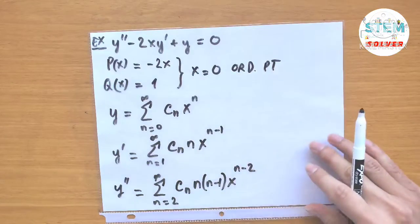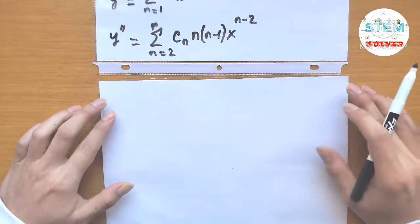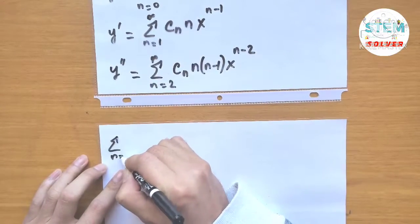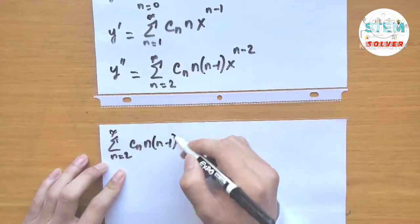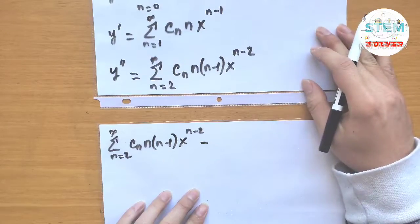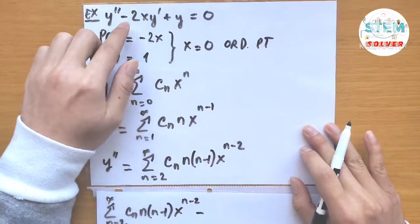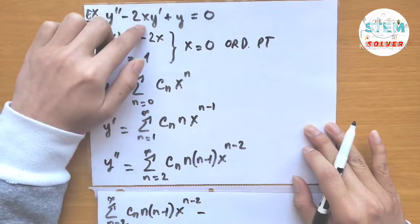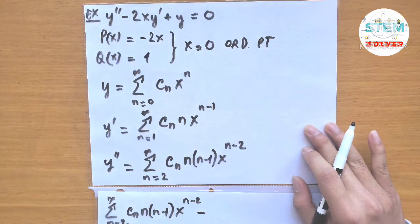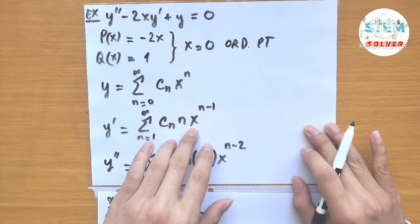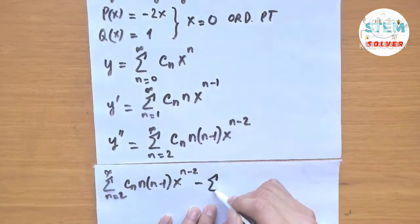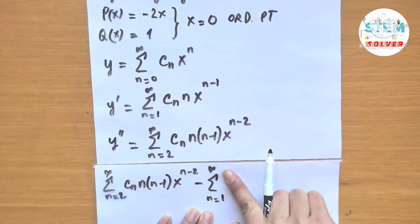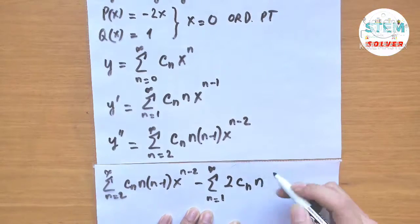Now let's substitute into the equation. We have y double prime, which is the power series from 2 to infinity of c_n times n times (n minus 1) times x to the n minus 2. Minus 2x times y prime — combining the x with x to the n minus 1 makes it x to the n — giving us the power series from n equals 1 to infinity of negative 2 c_n times n times x to the n.